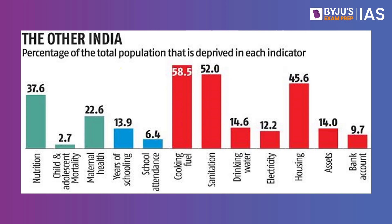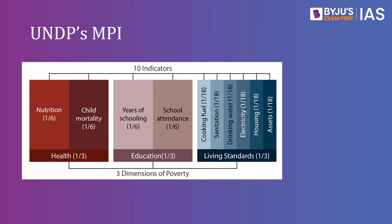These are the 12 indicators — housing, assets, having a bank account, electricity, drinking water, sanitation, and so forth. So the poor are not just identified on the basis of how much they earn or spend, but on all these indicators. The International MPI published by UNDP takes into consideration 10 indicators for global data, while the Indian version uses 12 indicators. Do remember that difference and don't be confused.